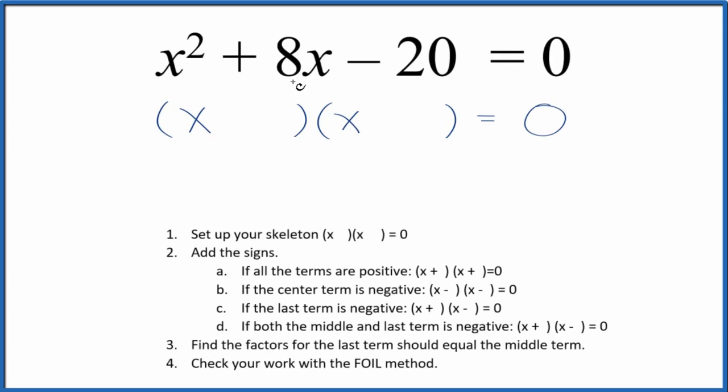Let's factor the equation x squared plus 8x minus 20 equals zero. The first thing we do, we set up a skeleton equation like this right here.